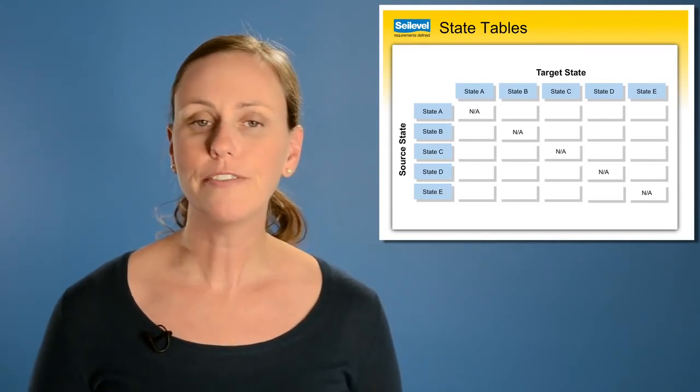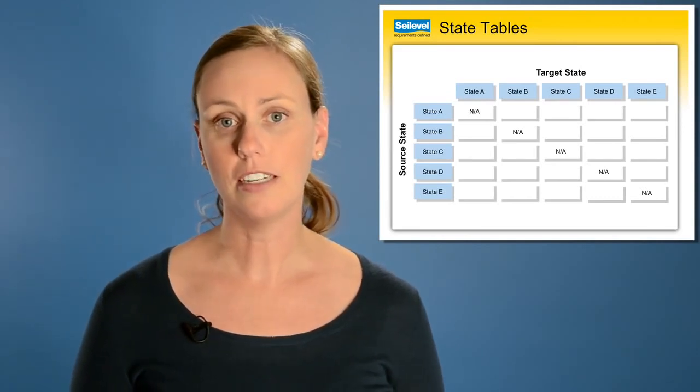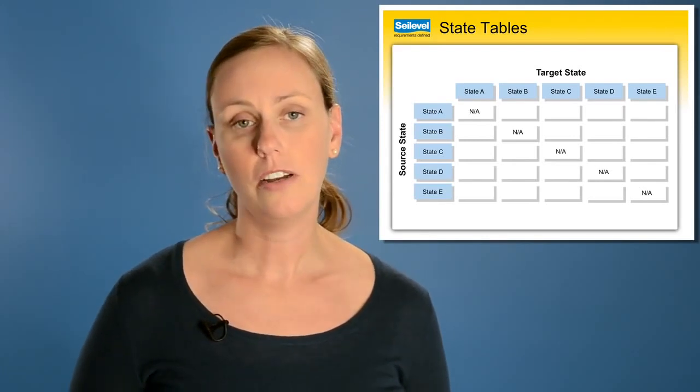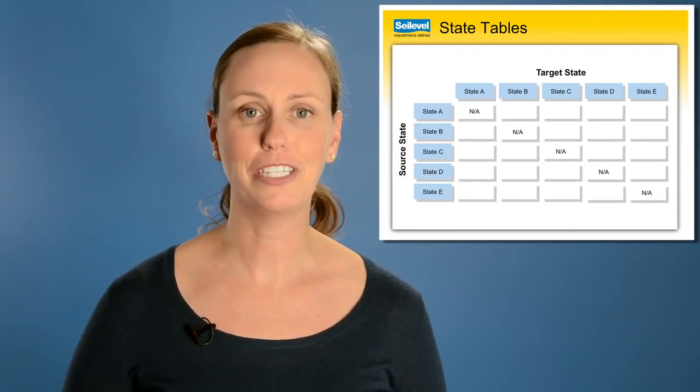To create state tables, you have to first identify the object you want to analyze the states for. Then, you have to identify all the possible states of that object. Now, you list all of those states down the first column and across the first row, making a grid to be filled in.